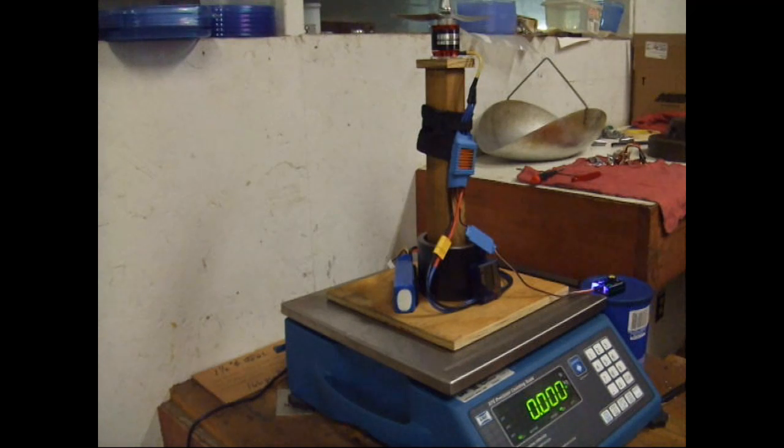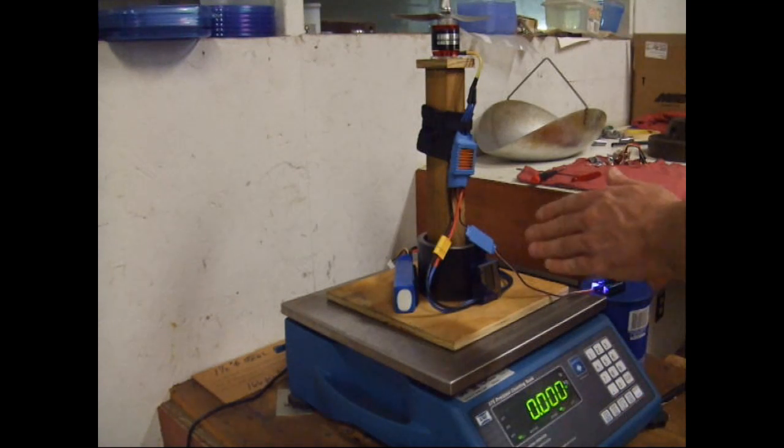60 amp electronic speed control on the test stand there. We're using the servo tester off to the right here to be our throttle input for our speed control to throttle the motor up while under test. So we're going to be able to see the thrust, which this scale has been zeroed out with the weight load on it, so we're going to be able to see the thrust in kilograms.